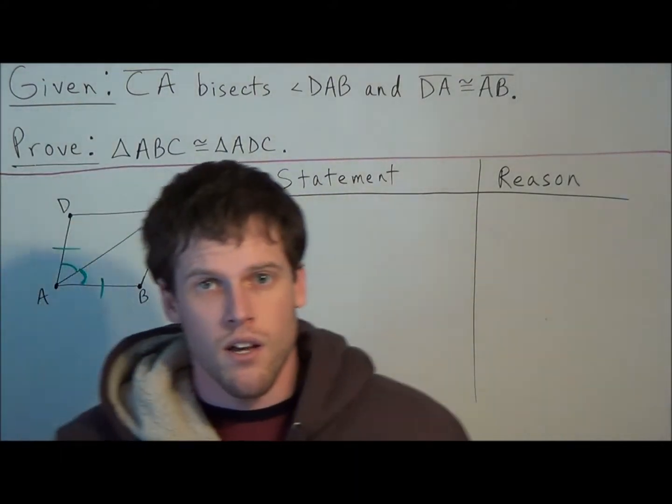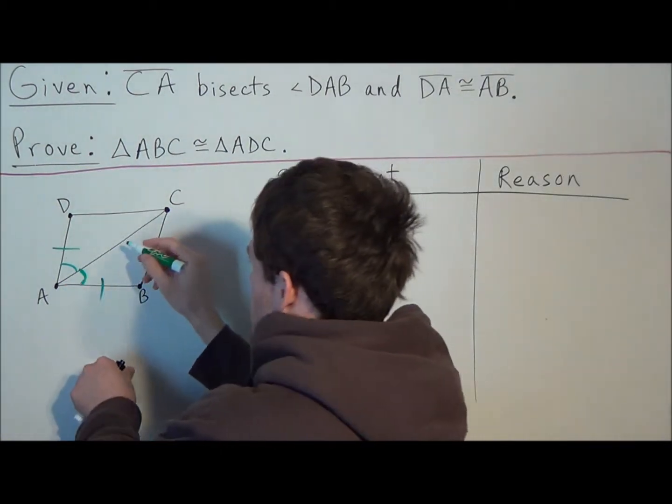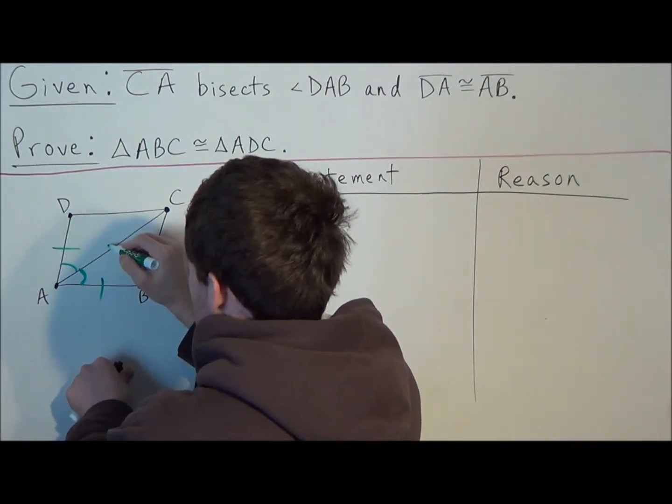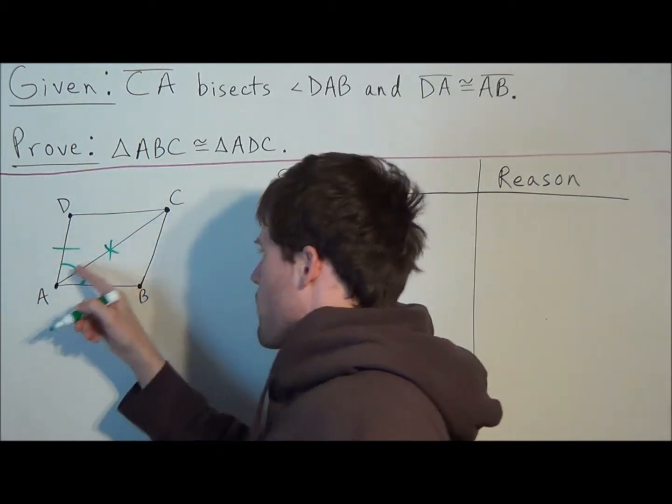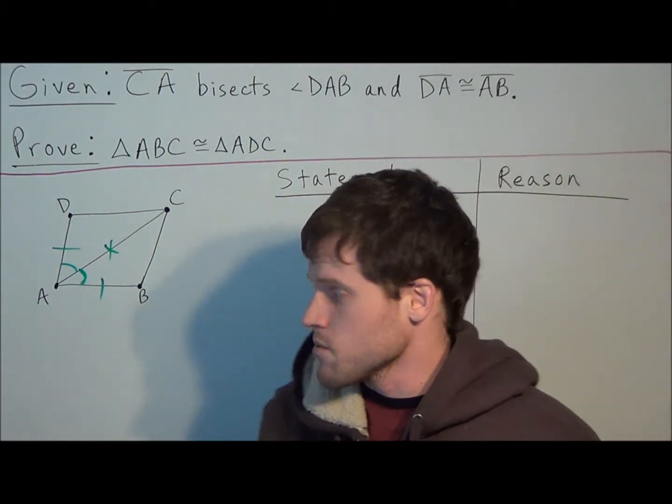And now the last one is a bit hidden, but notice that these two triangles share a common side. They're sharing AC. So we know that these two triangles are going to have another pair of sides congruent. The side AC is going to be congruent to itself.